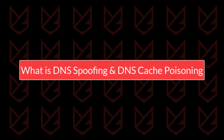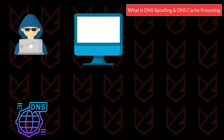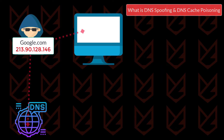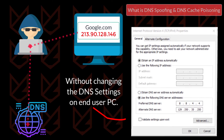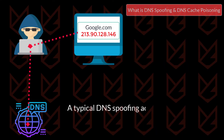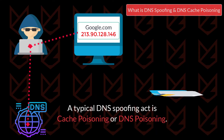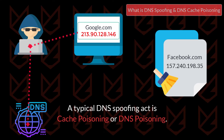What is DNS spoofing and DNS cache poisoning? DNS spoofing is an attack in which attackers spoof the DNS result without changing the DNS server settings on the end user's computer. A typical DNS spoofing act is cache poisoning or DNS poisoning. In DNS cache poisoning, the attacker spoofs the DNS cache, redirecting the user to a malicious site.